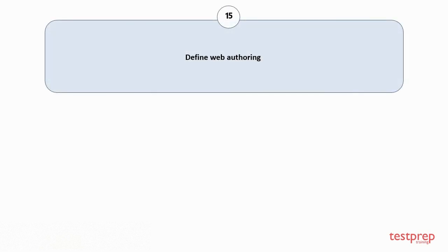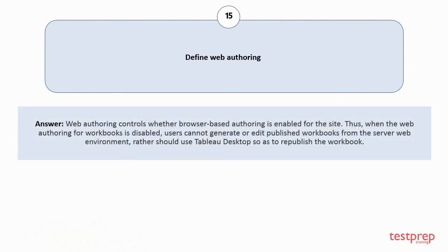Question number 15: Define web authoring. Web authoring controls whether browser-based authoring is enabled for the site. When the web authoring for workbooks is disabled, users cannot generate or edit published workbooks from the server web environment, and should use Tableau Desktop so as to republish the workbook.